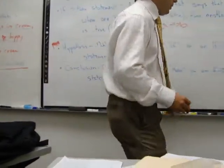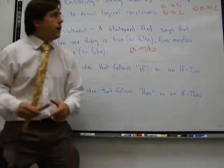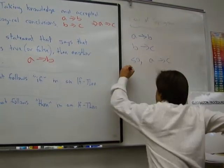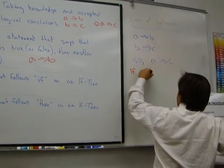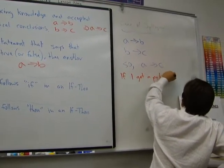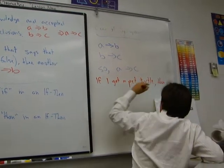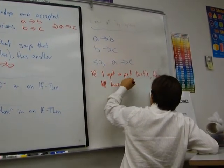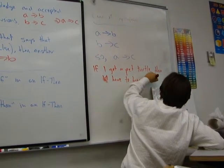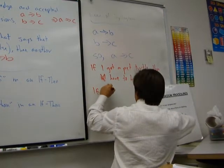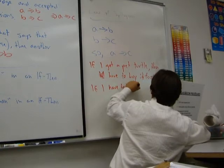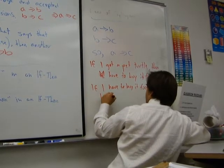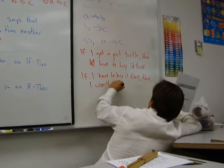Okay, the law of syllogism is a little bit more sophisticated, but shouldn't be that bad. So law of syllogism is: if A, then B; if B, then C; so if A, then C. If I get a pet turtle, then I'll have to buy it food. If I have to buy it food, then I won't have food for myself, because turtles eat a lot, right?